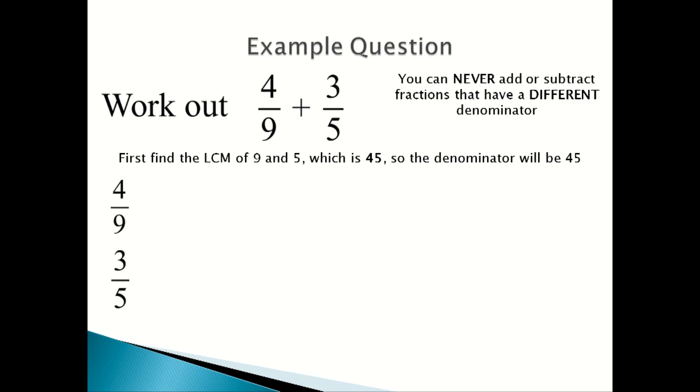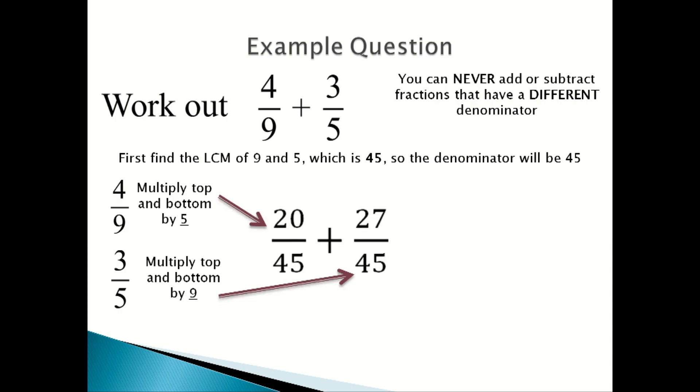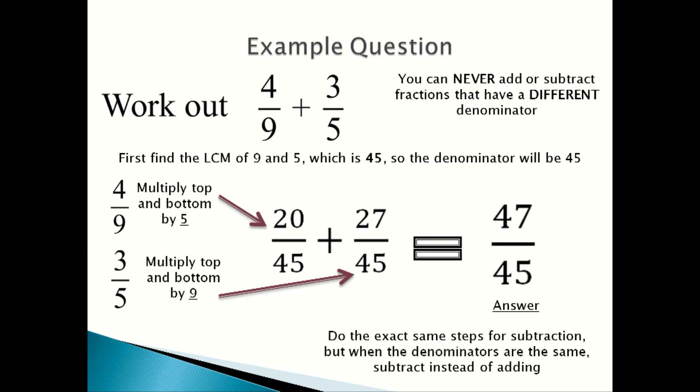Then 4/9, you multiply the top and bottom by 5, and then 3/5, you multiply the top and bottom by 9 to get 20/45 + 27/45. You add them together, then you get 47/45, which is your answer. With these types of questions, you do the exact same thing for subtraction, but when the denominators are the same, you subtract instead of adding.